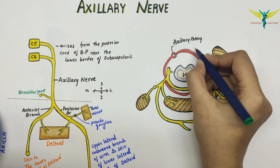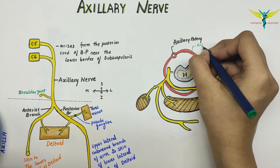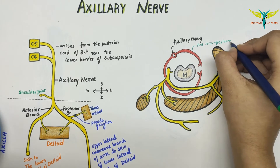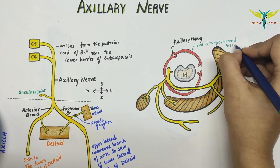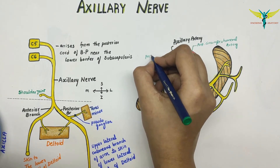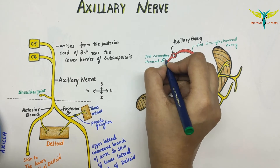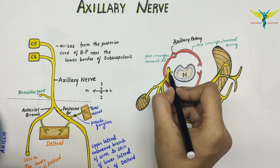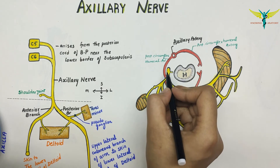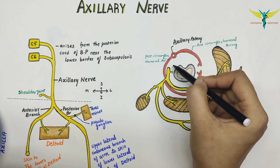This is the anterior circumflex humeral artery, a branch of the axillary artery, and this is the posterior circumflex humeral artery. The axillary nerve arises from C5 and C6 of the posterior cord of the brachial plexus near the lower border of the subscapularis muscle.